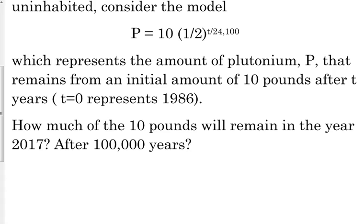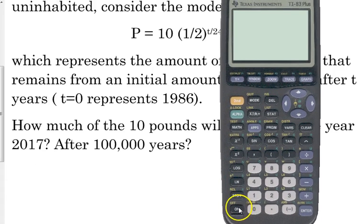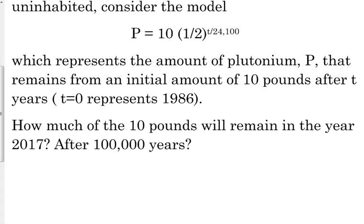So, let's figure out how much of the 10 pounds will remain in the year 2017. So next year, how much of this plutonium will still be hanging around? So what do we need to plug into our function here? Do we plug in 2017? No, we need to figure out how many years 2017 is from 1986. So, 2017 minus 1986 gives us 31. So, we're actually going to plug 31 into our function: 10 times 1 half to the 31 over 24,100.